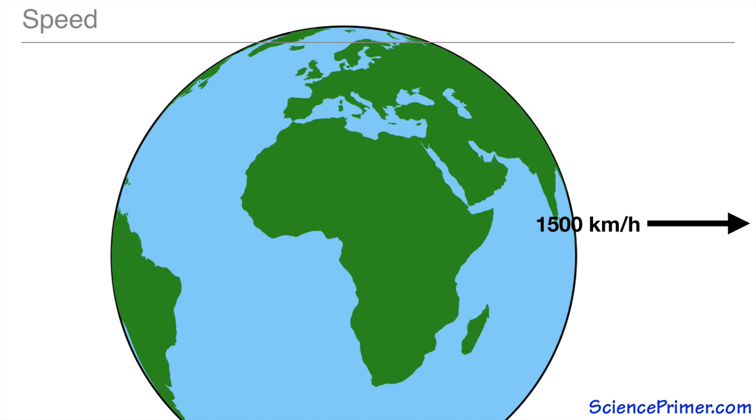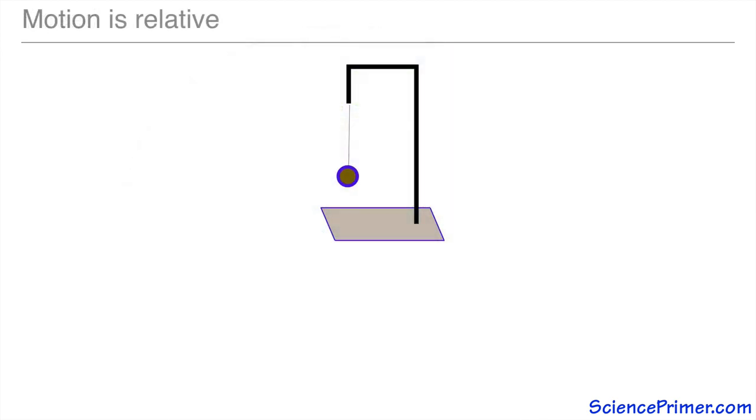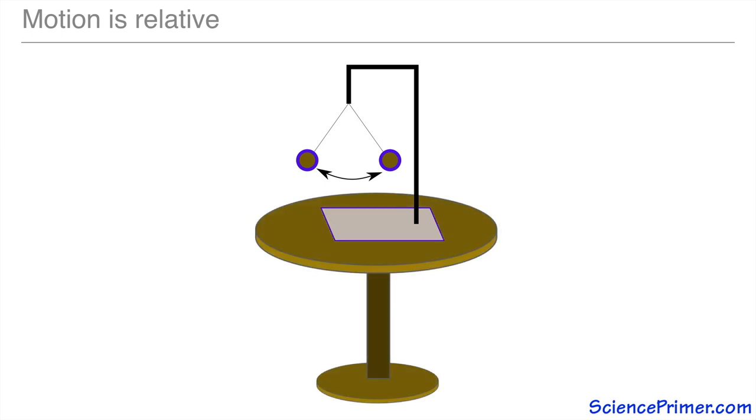This is because all motion is relative. Consider a weight hanging from a string. If you pull the weight up and let it go, it would start to swing back and forth. Now what if we put that stand, the weight it was hanging from, on a stool and started spinning the stool?